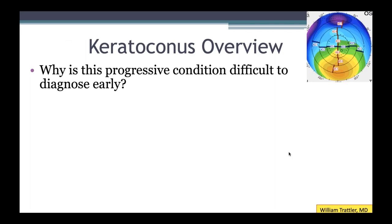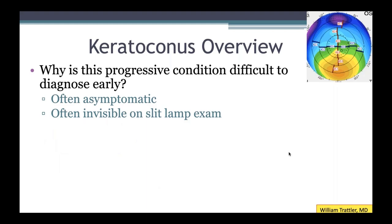Why is this progressive condition difficult to diagnose early? We often see patients coming in for LASIK or cataract consultations who didn't realize they had keratoconus. It's often asymptomatic — patients may think their vision is just a little blurry, but not important. On slit lamp exam, even a cornea specialist won't know the shape of the cornea unless they do a topography or tomography, because most patients with mild to moderate keratoconus have a normal slit lamp exam. It's not until the condition is much more advanced that you see actual thinning, apical scarring, and other signs.